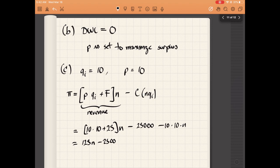The cost is 2500 minus 10 times the quantity, which is 10 times n. This equals 25n minus 2500, and it equals zero when n equals 100.